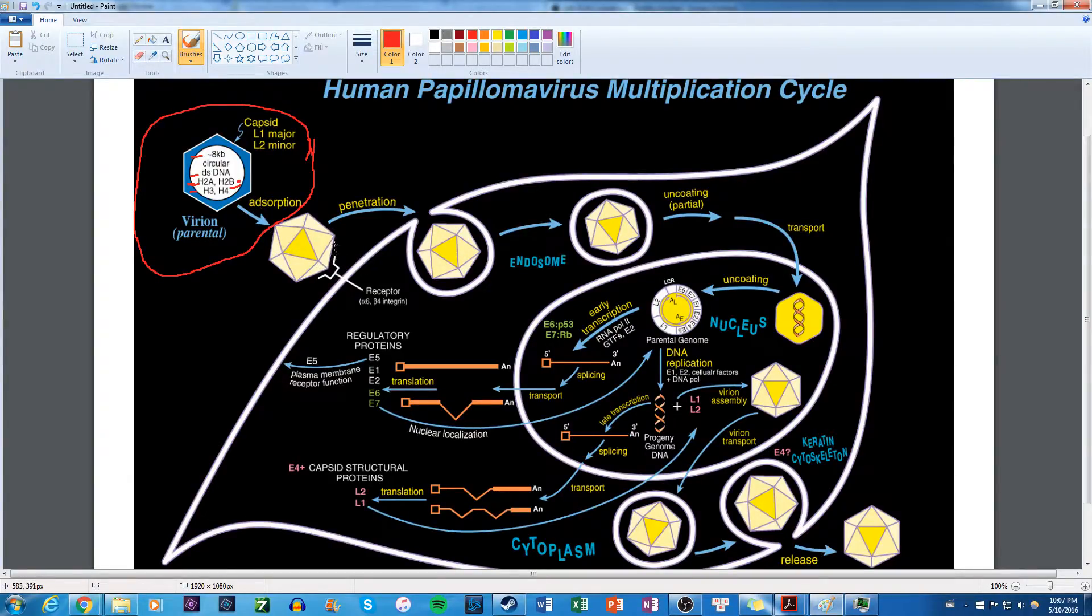Now the virion is an icosahedral naked virus, 55 nanometers in size, and it interacts with the alpha-6 beta-4 integrin molecules in order to enter the cell through receptor-mediated endocytosis. Once it's in the cell, it has a partial uncoating. This is the partially-uncoated virus, and then finally it has a full uncoating.